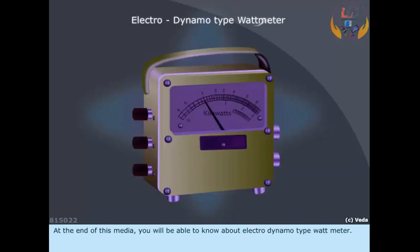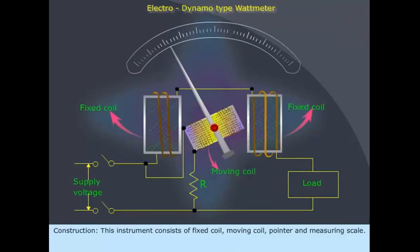At the end of this video, you will be able to know about the electro-dynamic type wattmeter. Construction: This instrument consists of a fixed coil, moving coil, pointer and measuring scale.